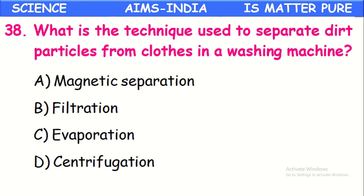What is the technique used to separate dirt particles from clothes in a washing machine? In a washing machine, dirt particles are removed from clothes by the process called centrifugation. The clothes are revolved at very high speed — whirling — by which dirt particles move away from the clothes. This process is called centrifugation.